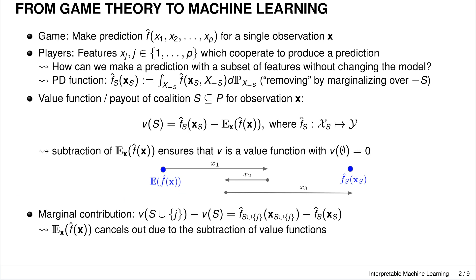We again use the concept of marginal contributions. We have a coalition S and we add the feature of interest j — or we don't — and the difference between those two is the marginal contribution. At the prediction level this is the prediction where feature j is in the coalition versus where it is not. The expected value cancels out because it appears in both value functions.